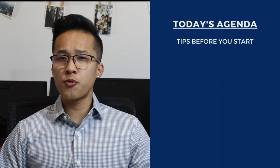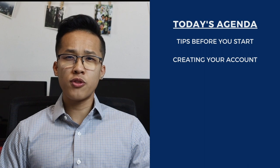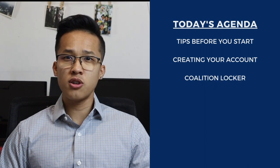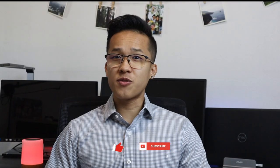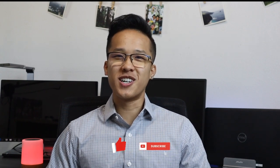Similar to the CSU, UC, and Common App walkthrough videos I did in the past, I'll be breaking up this series into two videos as well. Specifically for today's video I want to go over things such as tips before you start, creating your account, and then I'll walk you through three of the four main sections in the Coalition app which includes the Locker, Contacts, and Colleges list.